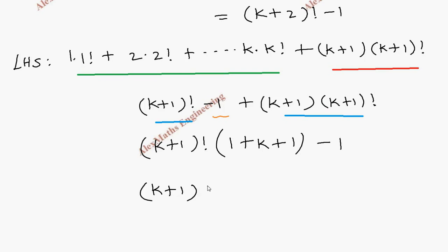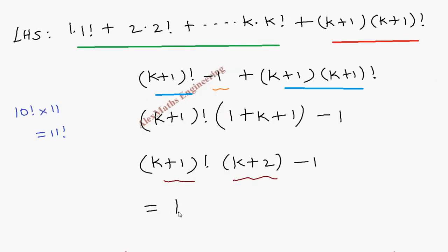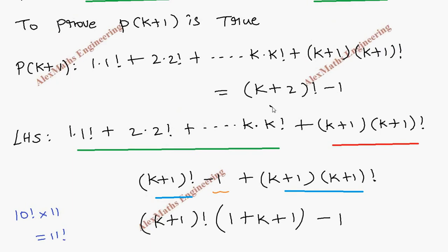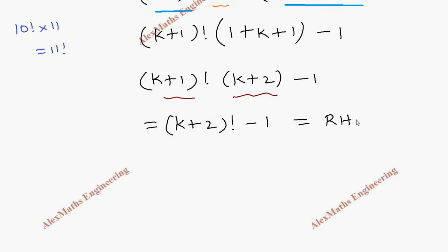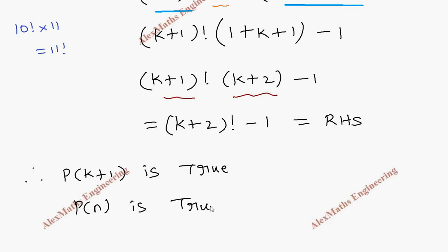Using the factorial property — for example, 10 factorial multiplied by the next number 11 equals 11 factorial — similarly k plus 1 factorial multiplied by k plus 2 equals k plus 2 factorial. So we get k plus 2 factorial minus 1, which is the right hand side of P of k plus 1. Since we took the LHS and obtained the RHS, P of k plus 1 is true, and hence P of n is true for all n belonging to natural numbers by the principle of mathematical induction.